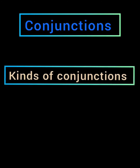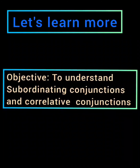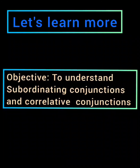Students, in the recent video lesson of this chapter, we have already learned about conjunctions and its different types. So the objective of this video lesson is to make you understand about subordinating conjunctions and correlative conjunctions. So let's begin with the video lesson now.